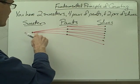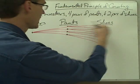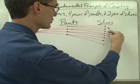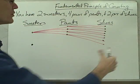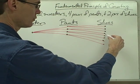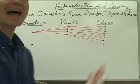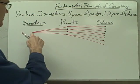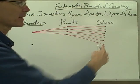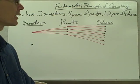So after I've matched up my sweater with each of these four pairs of pants, and each one of those combinations with my two pairs of shoes, then I've got a total of eight outfits made up of a sweater, one of these four pairs of pants, and each of my pairs of shoes.